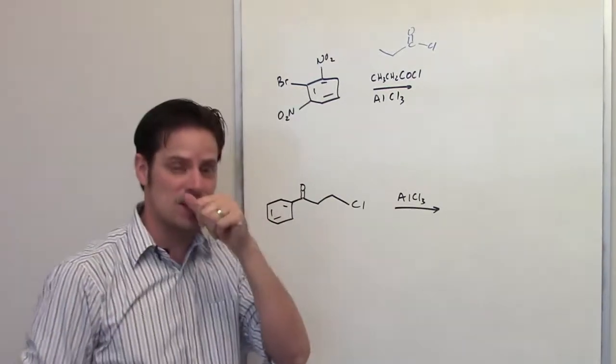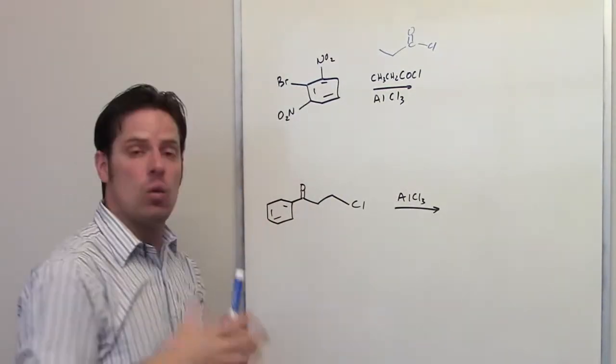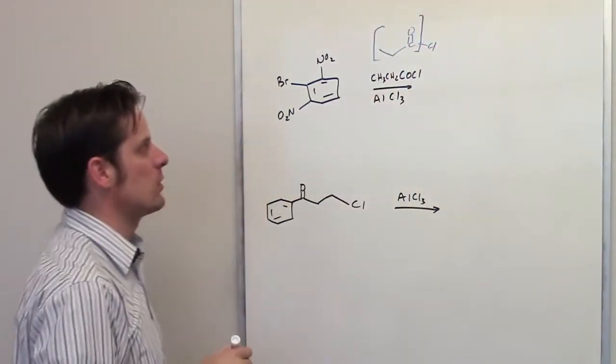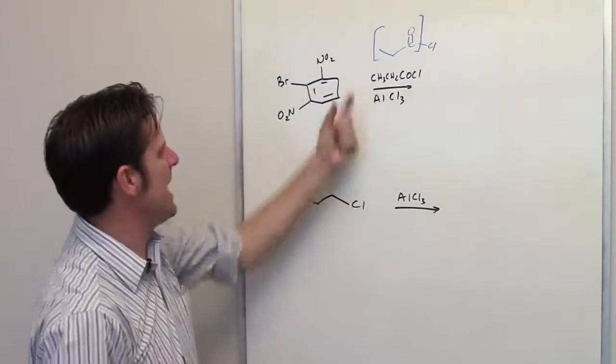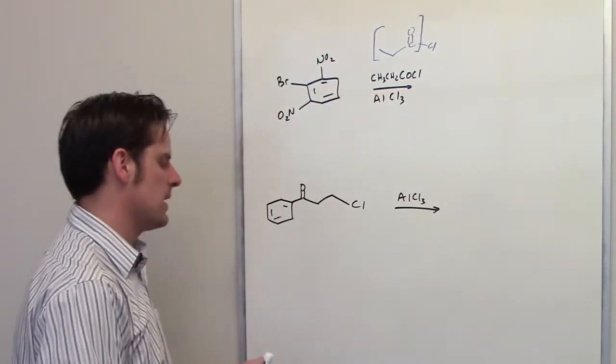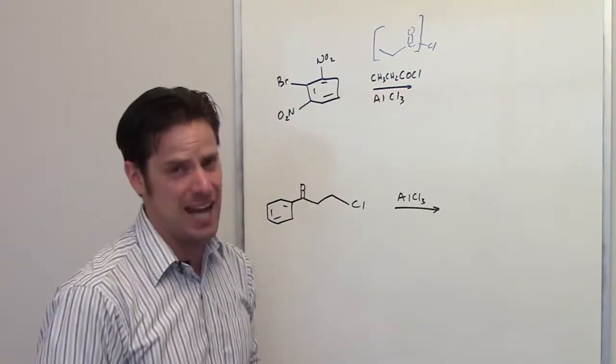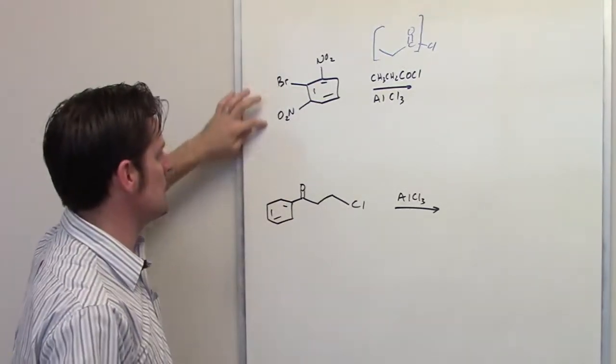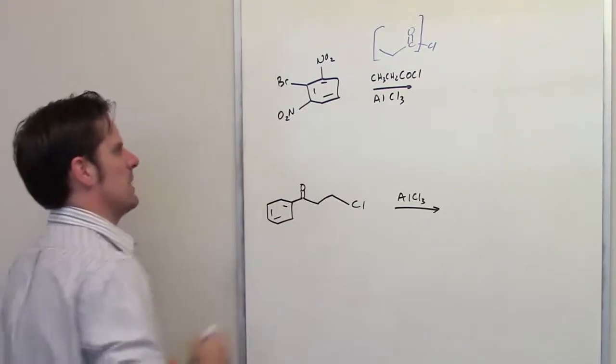Now, you should recognize this as Friedel-Crafts acylation. What that does is it places this group right here onto the ring. So in other words, I'm going to get this group appended or attached to that ring somewhere. Where in the world is it going to attach? Well, that's all going to depend upon the nature of the pre-existing substituents, these ones up here.